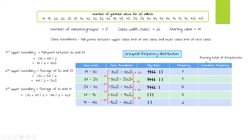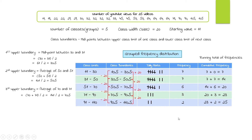Now let's do the cumulative frequency, which is the running total of frequencies. We take the first frequency and add zero: the first cumulative frequency is 7. Add the next frequency of 7 to get 14. Add 6 to get 20. Then 20 plus 3 is 23, and finally 25. The last cumulative frequency always equals the total number of observations, which is 25 in our case.